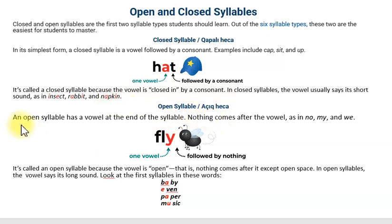Open syllable - açıq heca nə deməkdir? An open syllable has a vowel at the end of the syllable. Açıq hecalarda isə hecanın sonunda sait səslər durur, samit səs gəlmir. Nothing comes after the vowel as in no, my and we. Görürsünüz burada no, my, we sait-lə bitib, ona görə bular açıq heca adlanır.